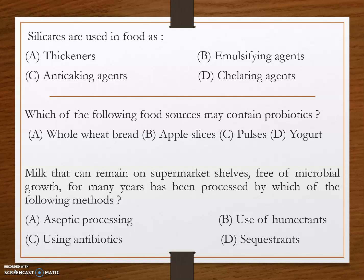Silicates are used in food as — the answer is option C: anti-caking agents. An anti-caking agent is an additive placed in powdered or granulated materials such as table salt or confectioneries to prevent the formation of lumps or cake forming.